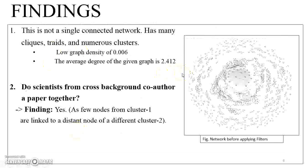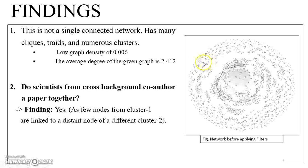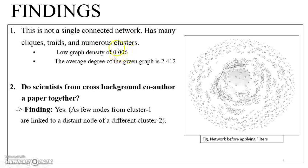After loading the file in Gephi, I applied the ForceAtlas and proportional layout algorithm before applying any filters to the network. The first statistical observation was that this is not a single connected network — it consists of numerous cliques, clusters, and few isolates, meaning it has a very low graph density. When I ran the density statistics in Gephi, I obtained a graph density of 0.006, which is an extremely low figure.